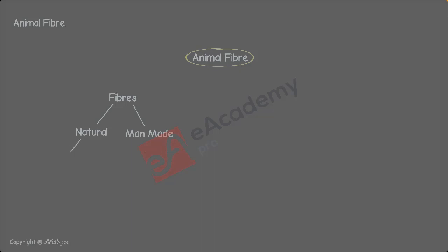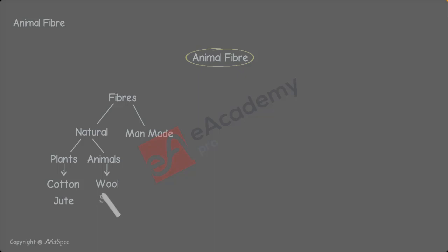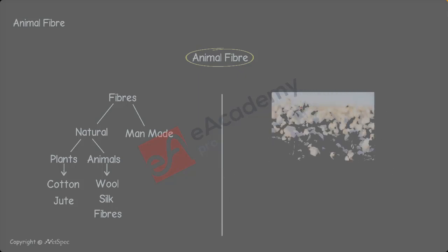The natural fibre is produced from plants and animals. Examples of fabric produced from plants are cotton fibre, jute fibre, etc. Examples of fabric produced from animals are wool and silk fibres. The fabrics produced from man-made fibre include polyester, nylon, etc.